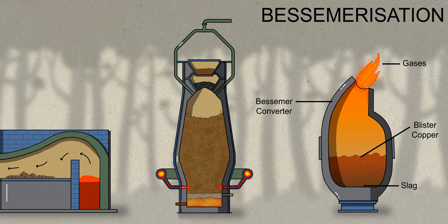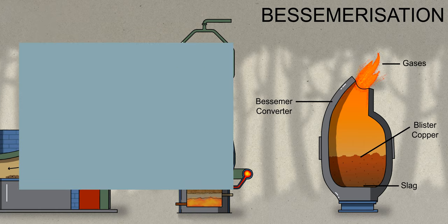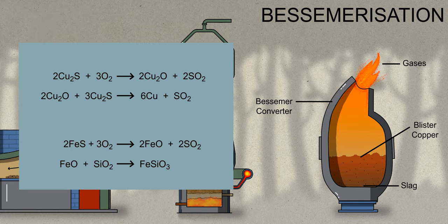Step 6 is bessemerization. The molten matte is drawn from the smelting furnace and poured into a second furnace called a Bessemer converter. In this method, air is blown into the molten copper material. The silica flux reacts with the remaining iron to form a slag, and the oxygen reacts with the sulfur to form sulfur dioxide. The resulting molten material contains about 98–99% copper by weight and is called copper blister.